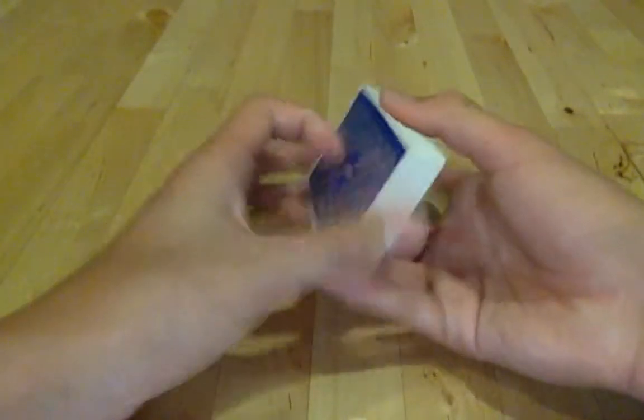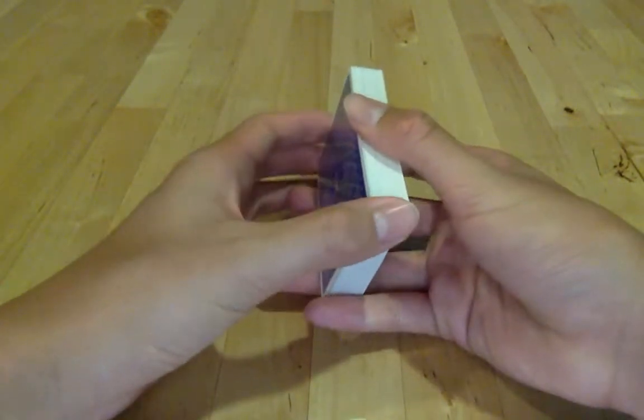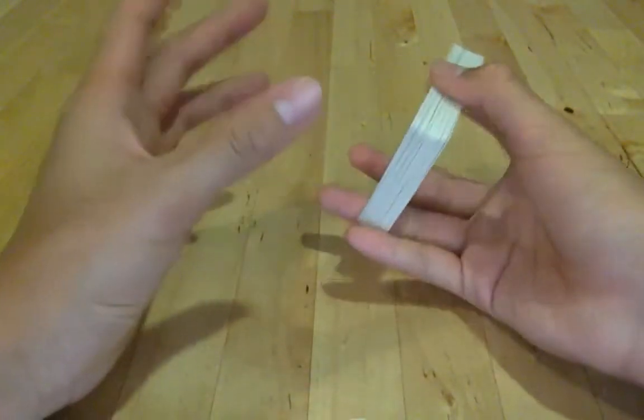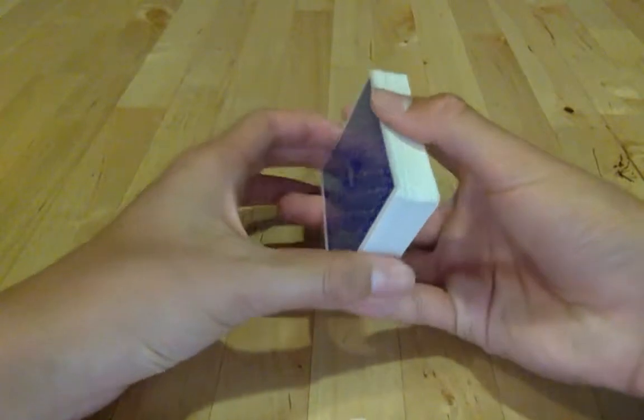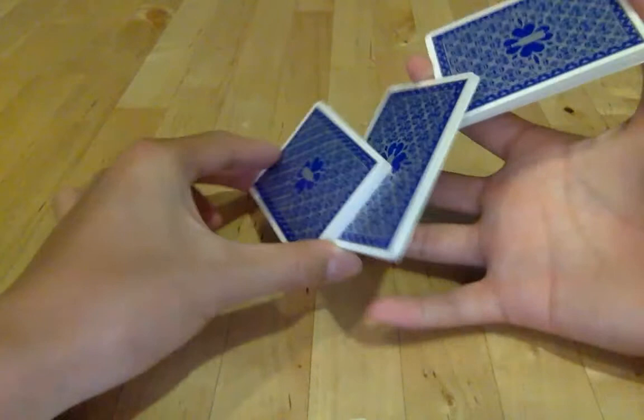This is an extremely easy flourish, very basic, but yet very visual effect. What you are going to start off with is a Z-grip. It kind of looks like a Z, I guess.